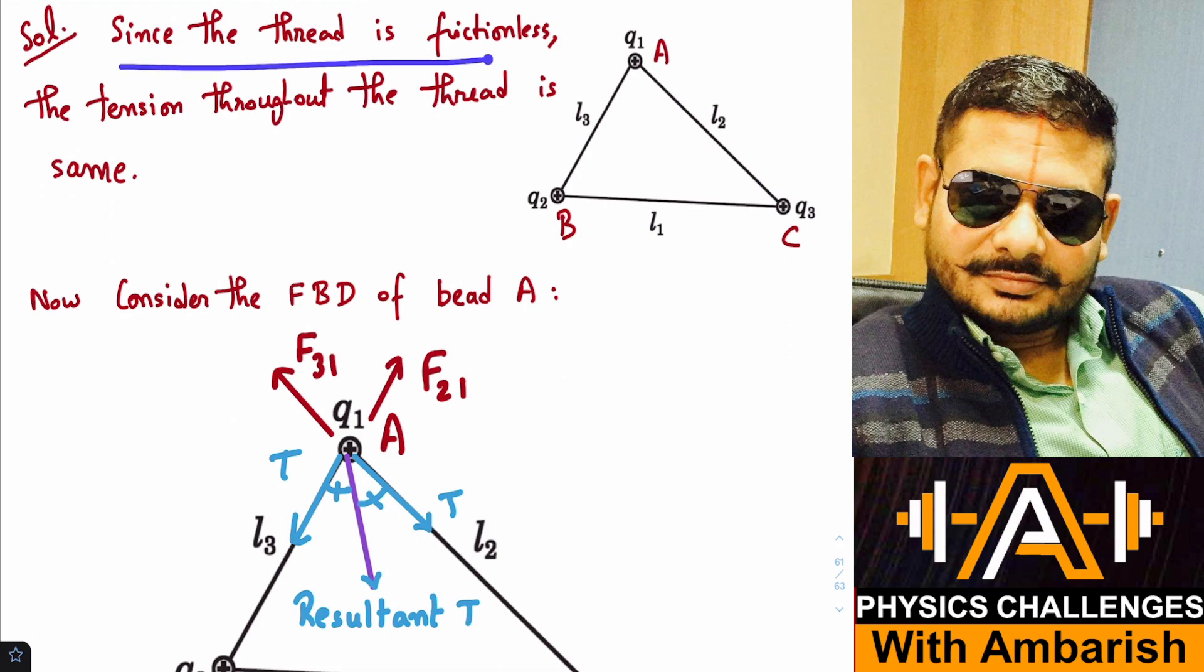Now since the thread is frictionless, the tension throughout the thread is same. So whatever is the tension here, throughout the thread tension is same. And if you look at the FBD of bead A, so there is one tension acting here and the same tension T is acting here.